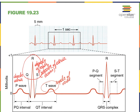During the depolarization of the ventricles, we can also assume that repolarization of the atria is occurring here. We're not seeing that in the QRS complex, but this is the time when repolarization of the atria is occurring as well. Finally, the T wave represents the repolarization of the ventricles.